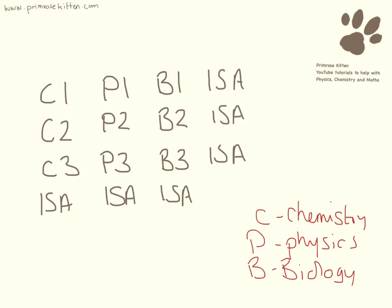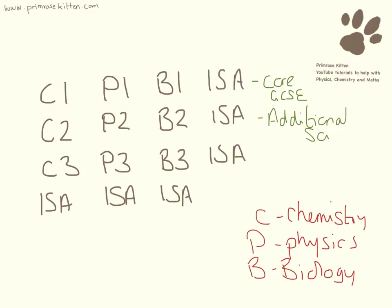So if you're doing core GCSE, you're going to be sitting these units here and a controlled assessment or an ISA, and this is going to be your core GCSE. Now some of you might also be doing an additional GCSE — that is these units here: C2, P2, B2 and a controlled assessment. That is your additional science ISA and your additional science GCSE.